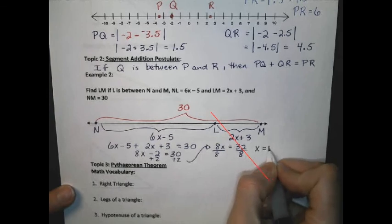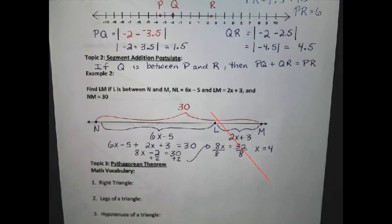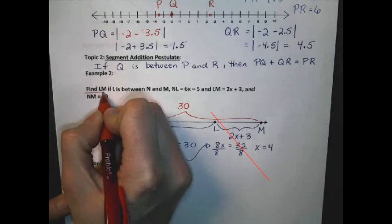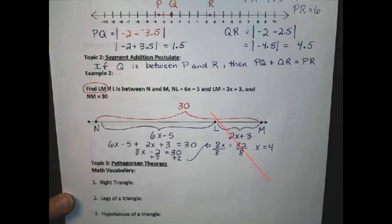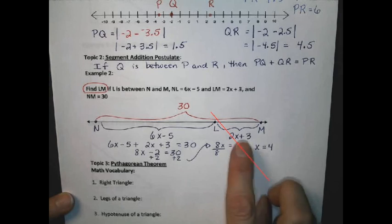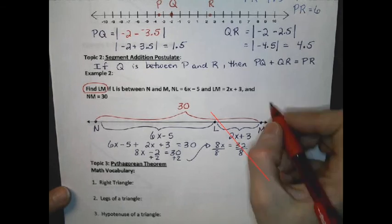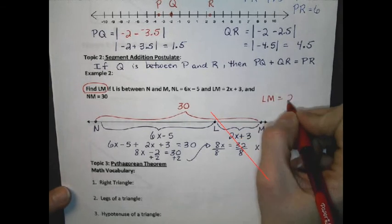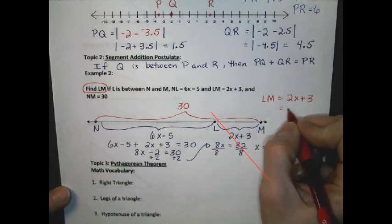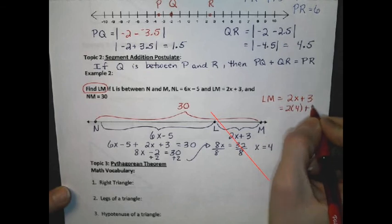However, I am not quite done. With any word problem, it is always important to go back and ask yourself, what is it they are looking for me to find? They want to know the distance LM. What I have found is what x represents. So to finish the problem, I need to go back and plug x into the value for LM. Since LM equals 2x plus 3, and I now know that x is 4, I get 2 times 4 plus 3, which tells me that LM equals 11.